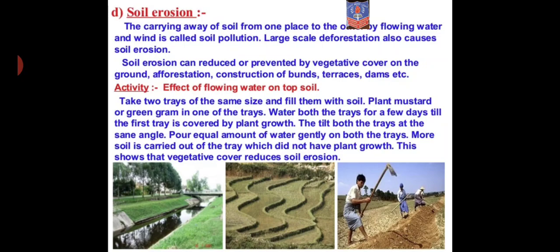The construction of bunds — raised layers of soil that prevent soil from being washed away by flowing water — also helps reduce soil erosion. Even the construction of terraces and dams are all responsible for reducing soil erosion. So we have discussed what soil erosion is and how it can be reduced.